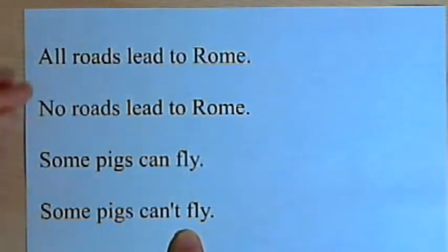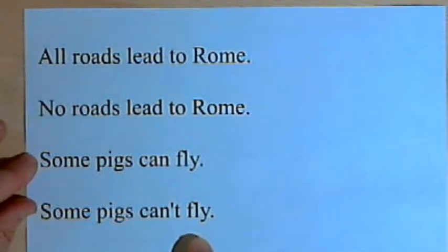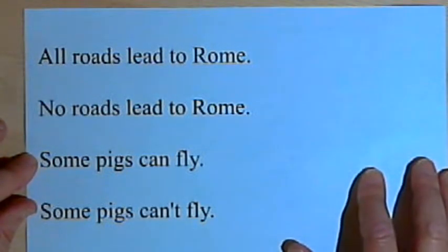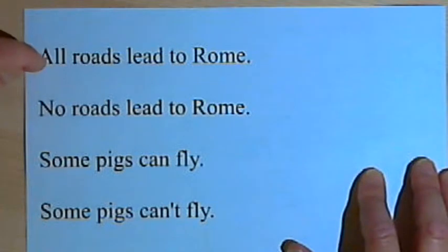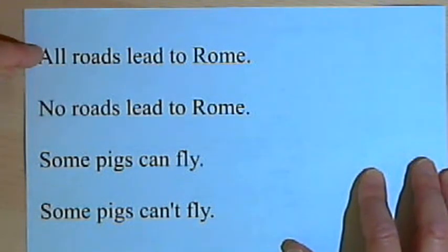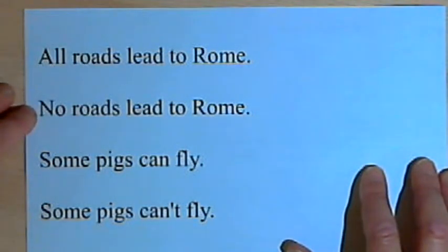So when you've got things like all, no, or some, or variance of them, each, every, then you've got to be careful before you decide what the negation is. If you've got all, all you have to do is say that there are some that are the opposite. All roads lead to Rome, some roads don't lead to Rome. If you've got no, no roads lead to Rome, once again we're going to use some. Some roads do lead to Rome.